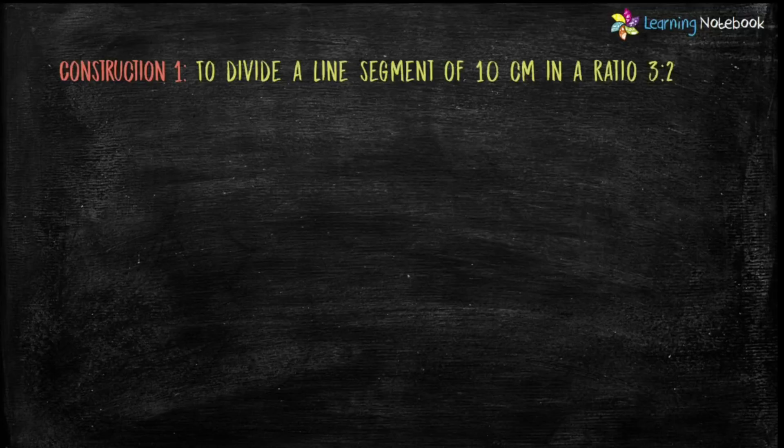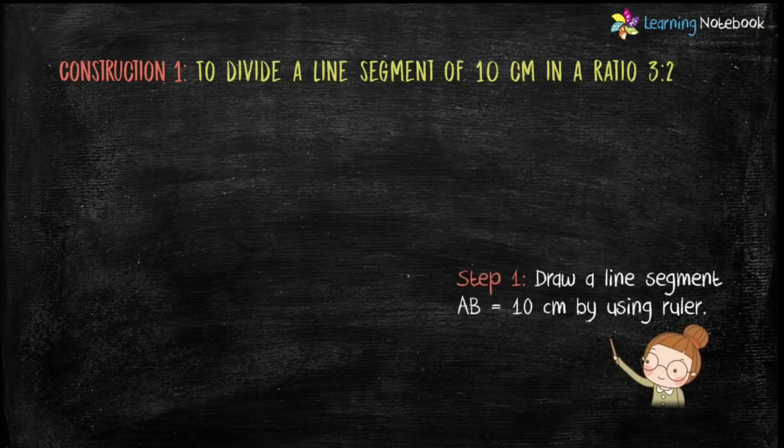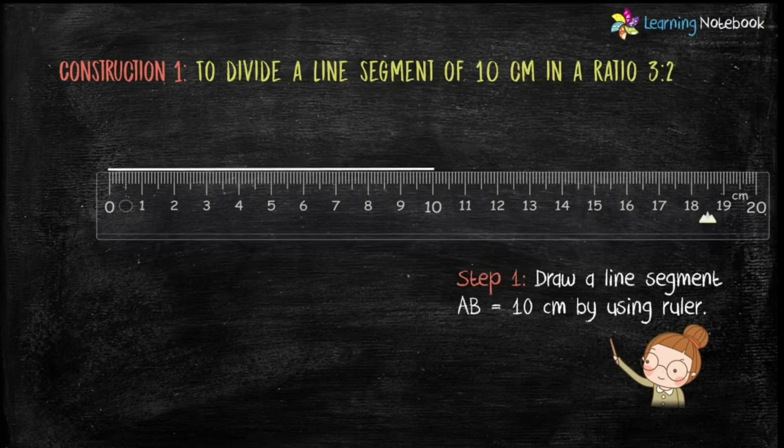Construction 1: To divide a line segment of 10 cm in a ratio 3:2. Let's see how to do it. Step 1: Draw a line segment AB = 10 cm using a ruler.